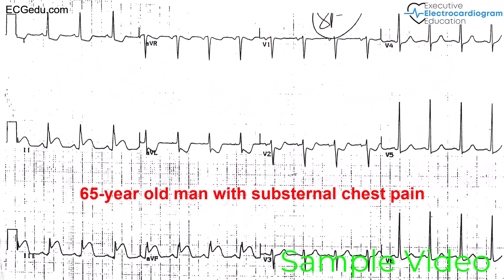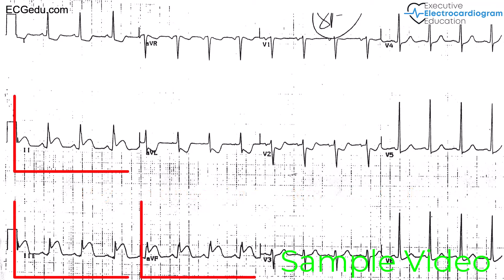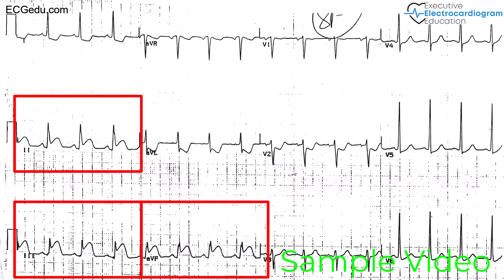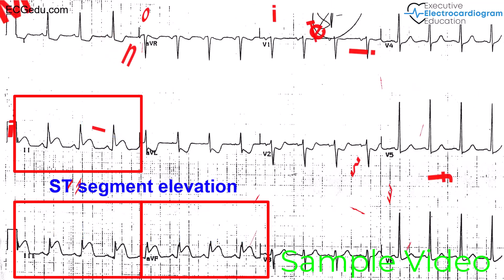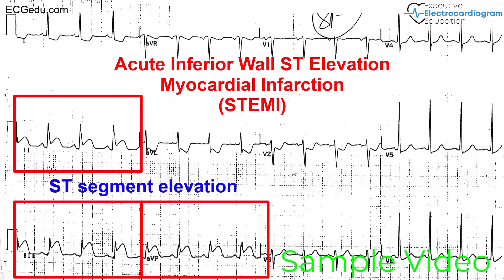This 65-year-old man presented to the emergency room complaining of severe substernal chest pressure that started an hour earlier. If you look at leads 2, 3, and AVF, the ST-segments are elevated above baseline. This patient is having an acute inferior wall myocardial infarction.